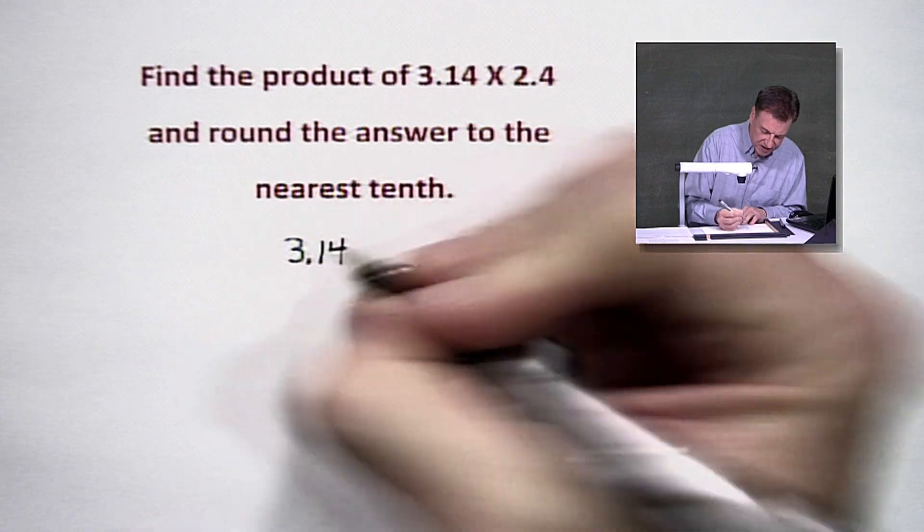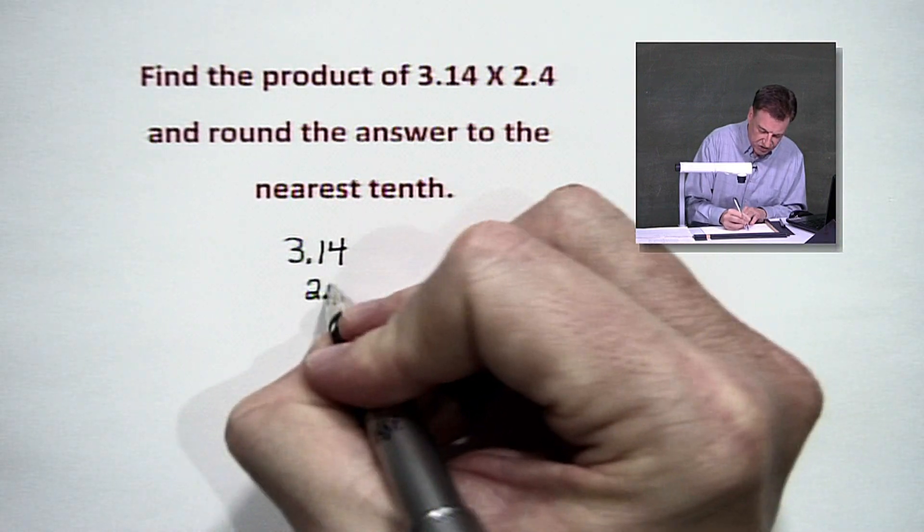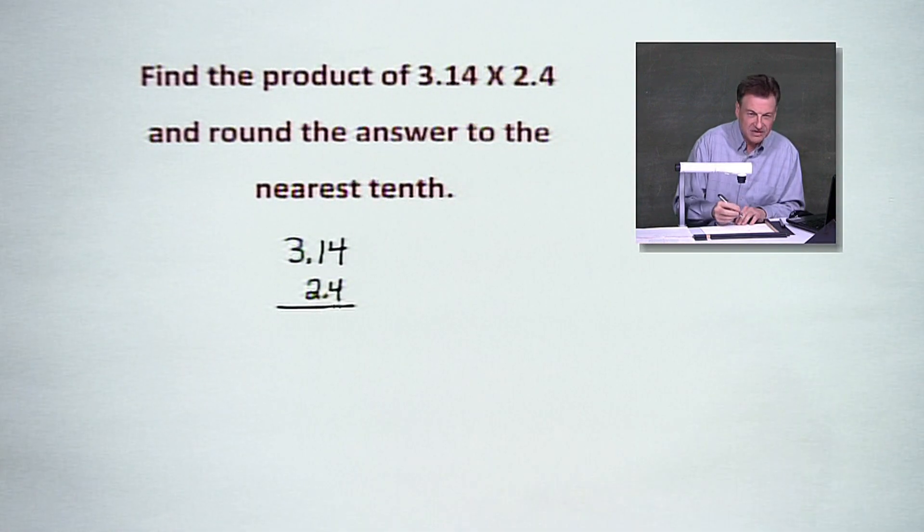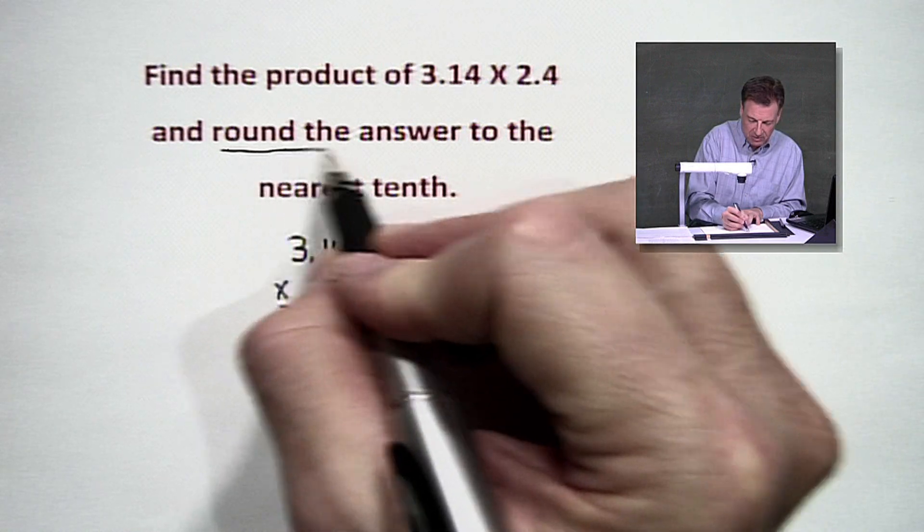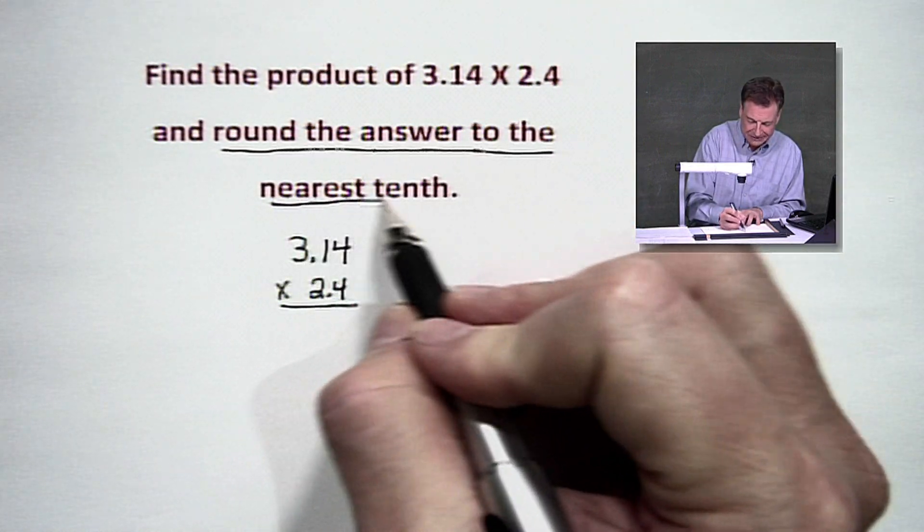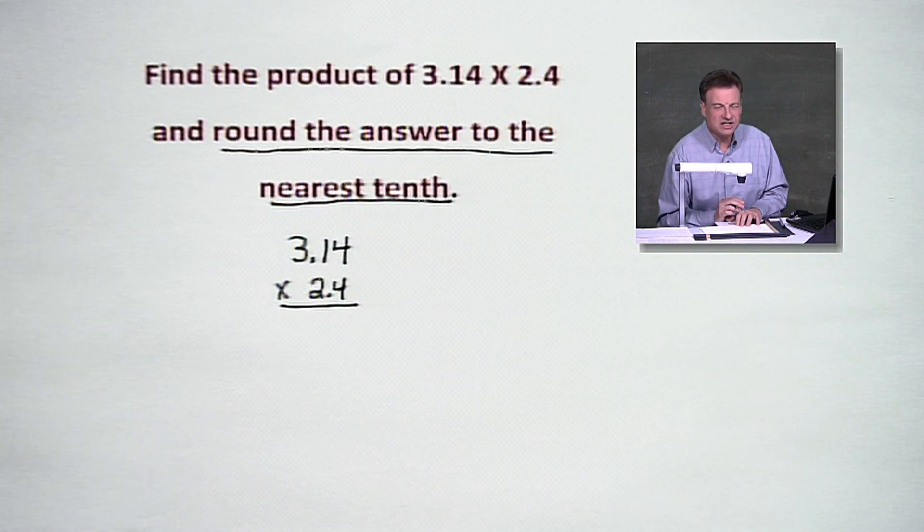How about 3 and 14 hundredths, and let's put down 2 and 4 tenths right underneath it, and we're going to multiply. Pretty straightforward. And remember, we're going to round off at the very end to the nearest tenth.